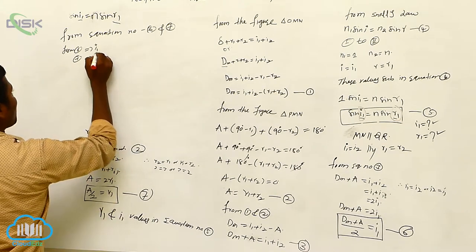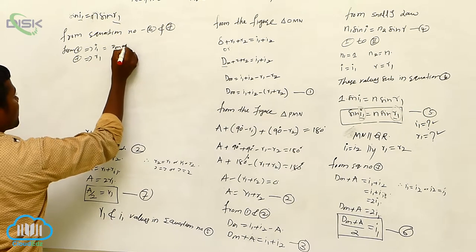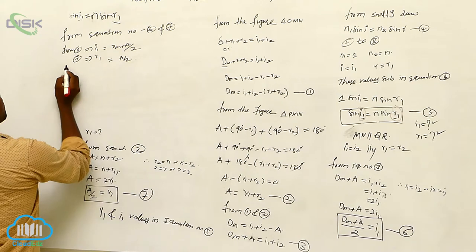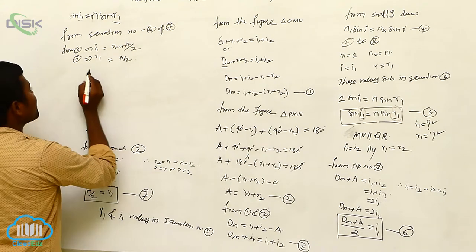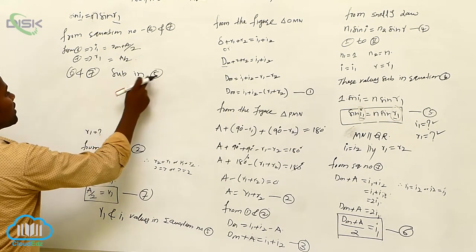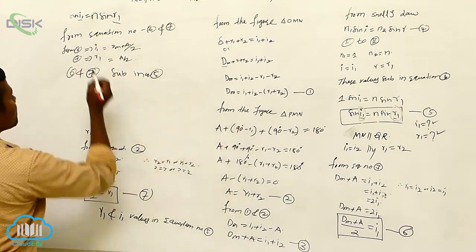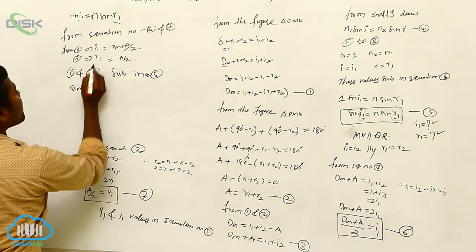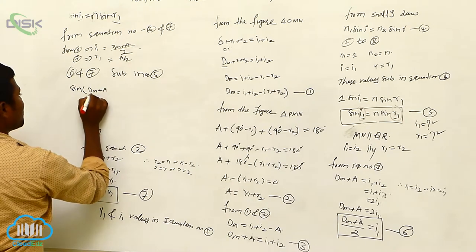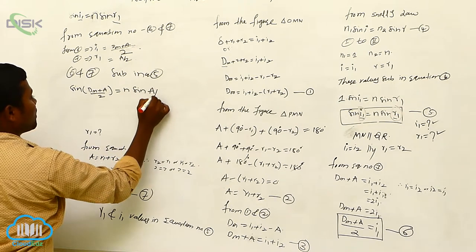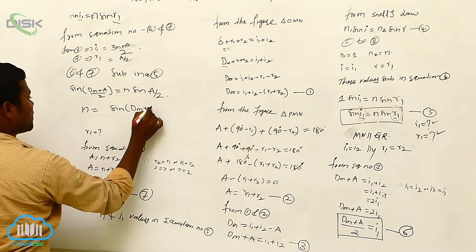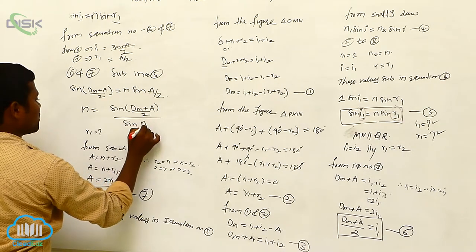From equation seven, r1 is equal to a by two. i1 is equal to dm plus a divided by two. Substitute from equations six and seven into equation number five, which is sine i1. That gives n is equal to sin((dm + a) / 2) divided by sin(a / 2).